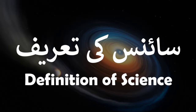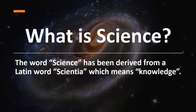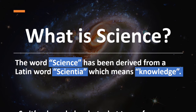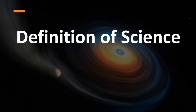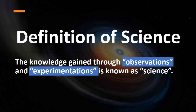Science ki tarif, yani definition of science: What is science? The word science has been derived from a Latin word 'scientia' which means knowledge. But what type of knowledge is it? The knowledge gained through observations and experimentations is known as science. Yani observations aur experimentations ke zariye hasil hone walay ilm ko science kaha jata hai.